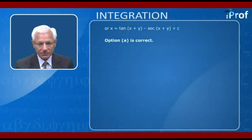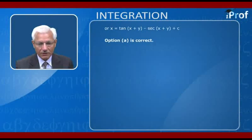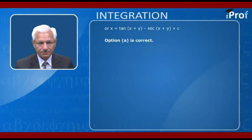Therefore, x = tan(x+y) − sec(x+y) + c, where we have substituted back u = x + y. Hence, option (a) is correct.